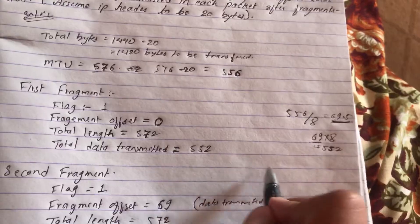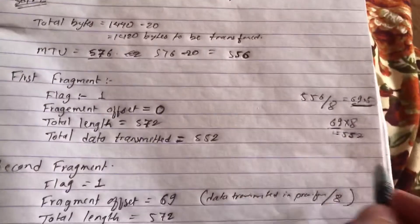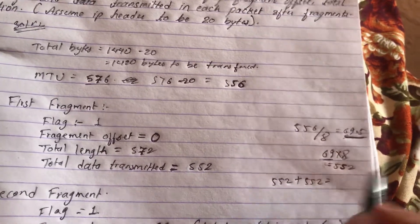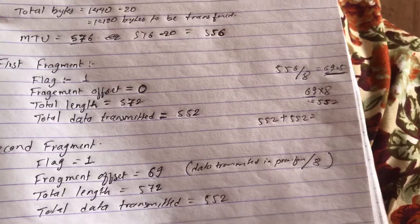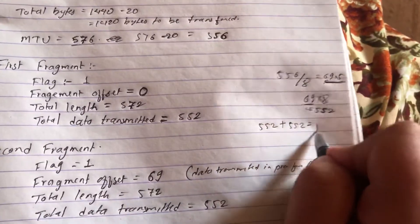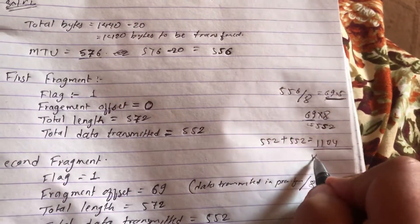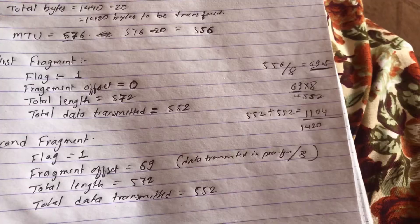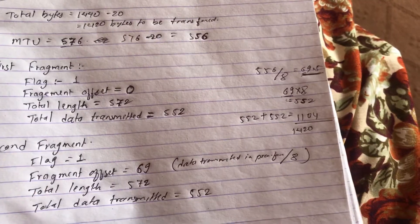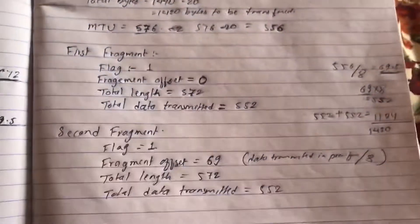Out of the 1420 bytes to be transmitted, we've sent 552 in the first fragment and 552 in the second fragment, giving 1104 bytes total. Subtracting from 1420, we have 316 bytes remaining to be transmitted in the third fragment.